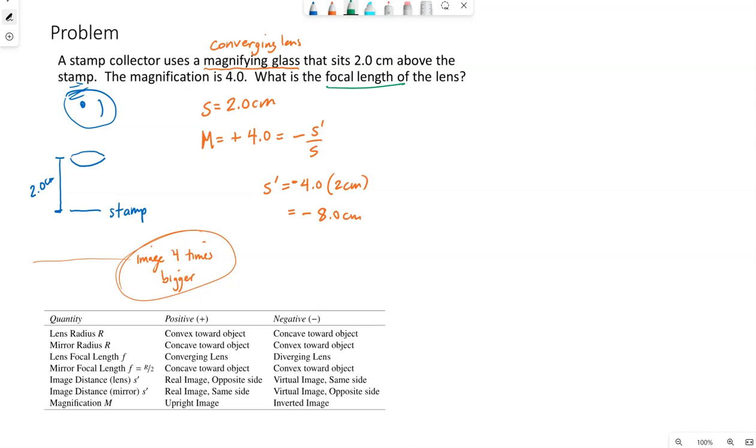All right, we're looking for the focal length of this lens. We can relate S and S prime and F together. S was given. S prime we just calculated. So F, I can change that to a minus one over eight. So two sig figs, I'm getting 2.7 centimeters.